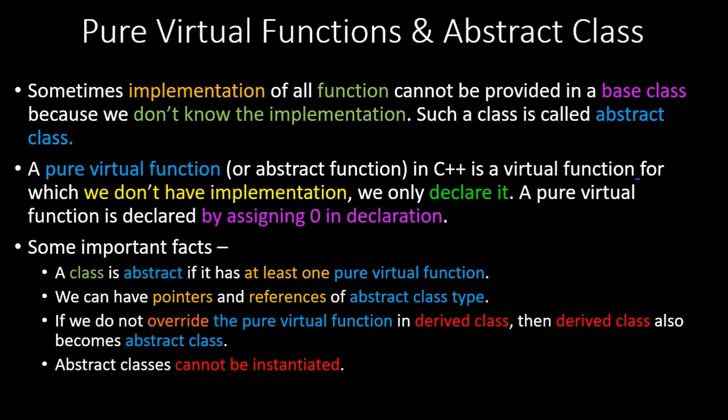A little bit about pure virtual functions and abstract classes. Sometimes the implementation of all functions cannot be provided in a base class because we don't know the implementation. In such a class we do not have any definition or implementation — we just have the declaration. Such a class becomes an abstract class. A pure virtual function in C++ is a virtual function for which we do not have an implementation; we only declare it.